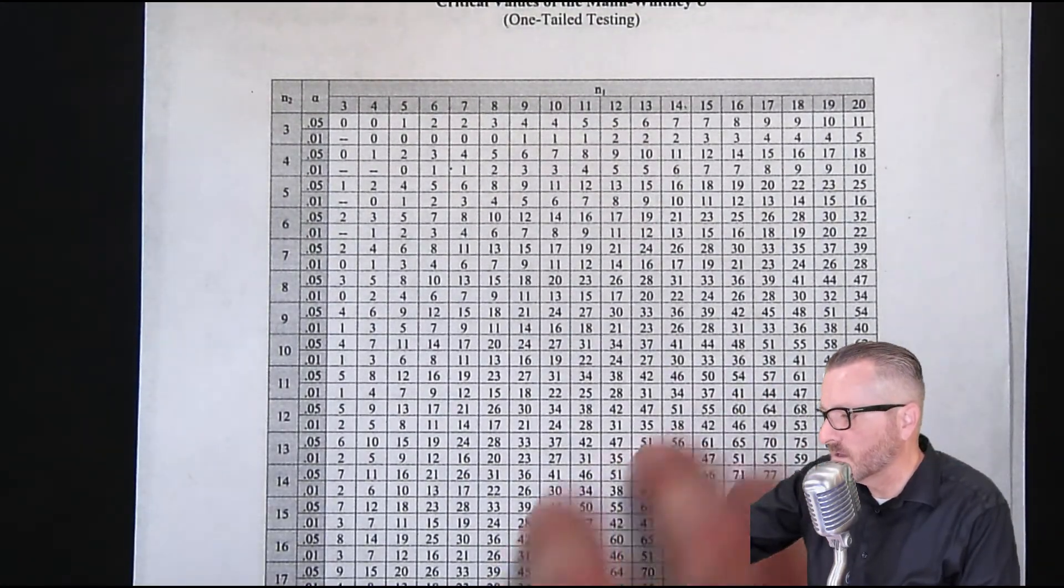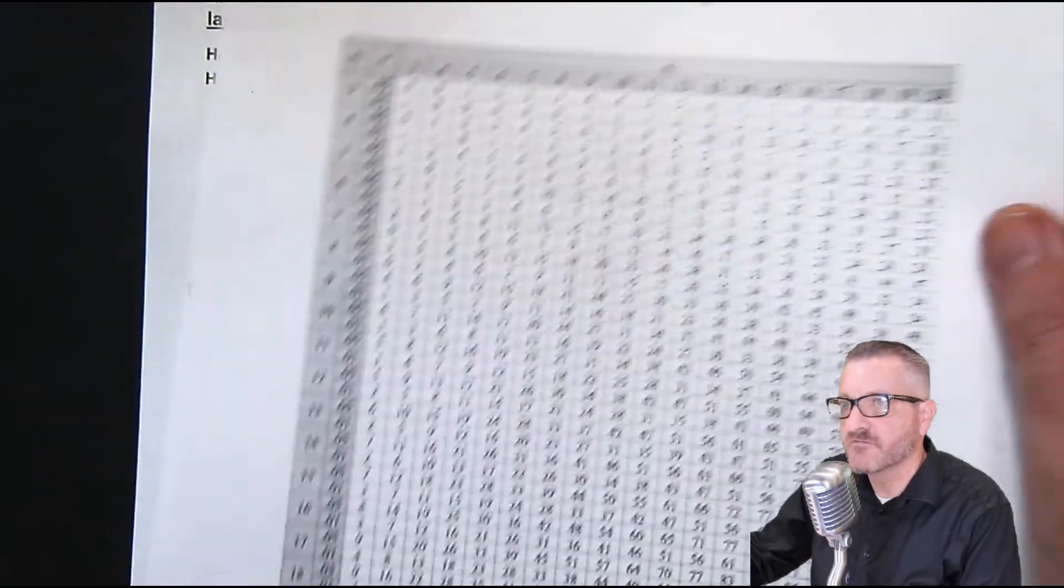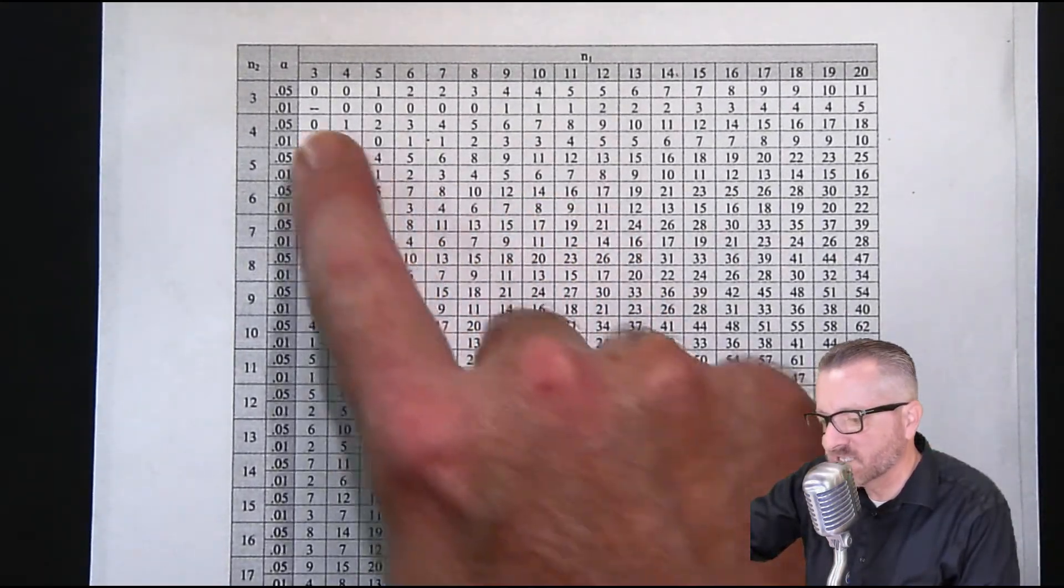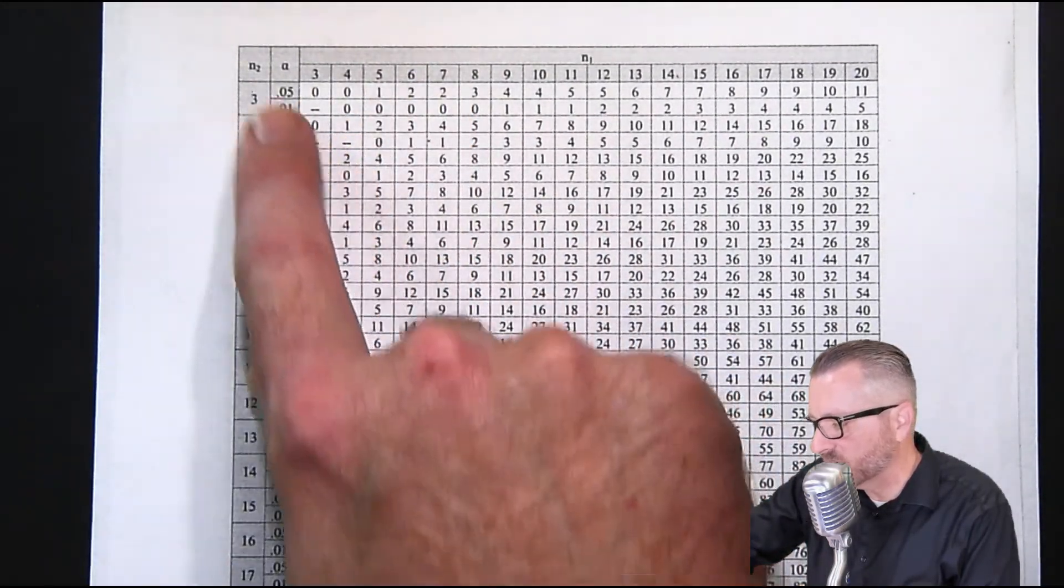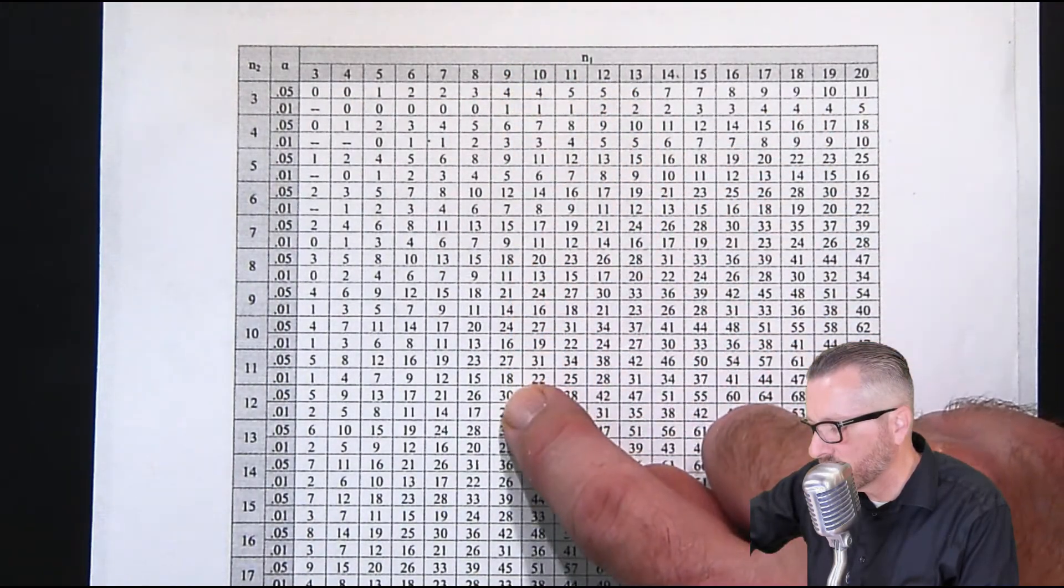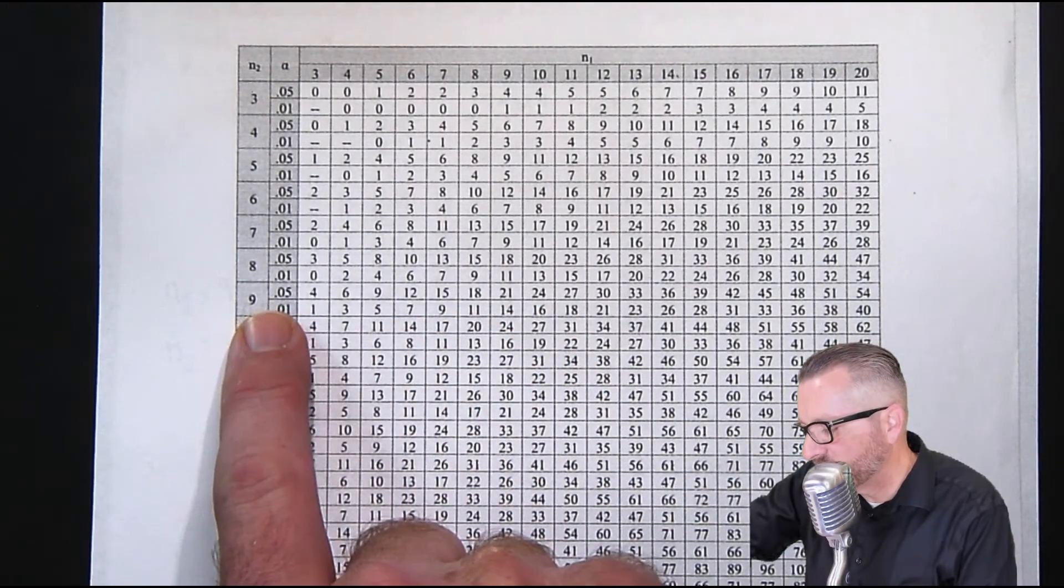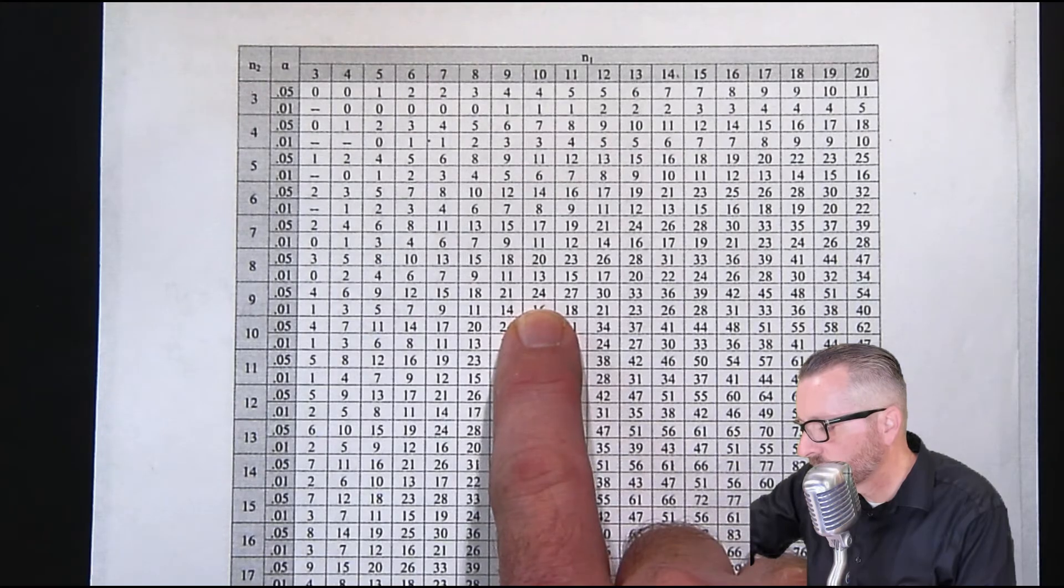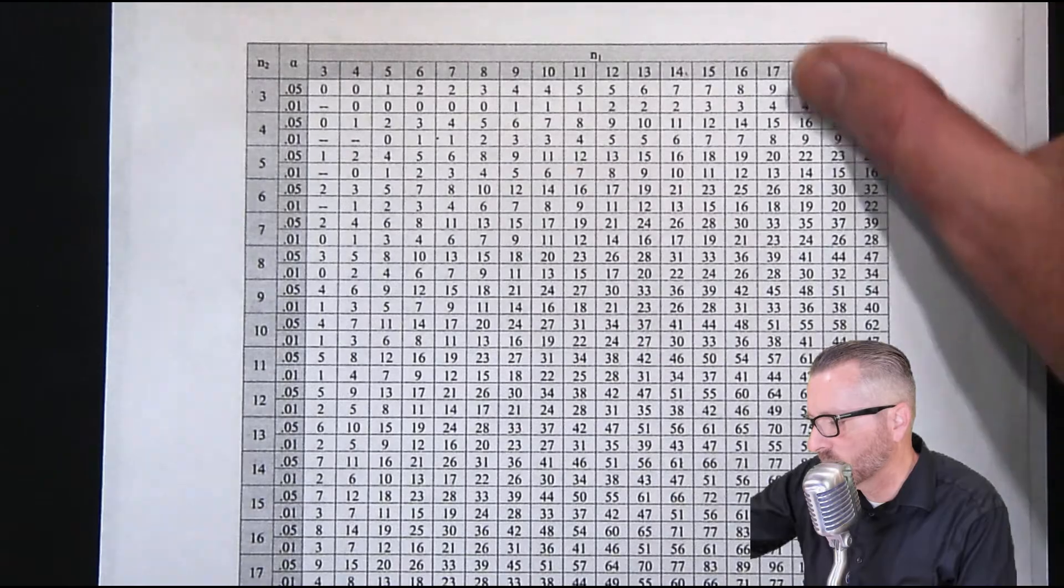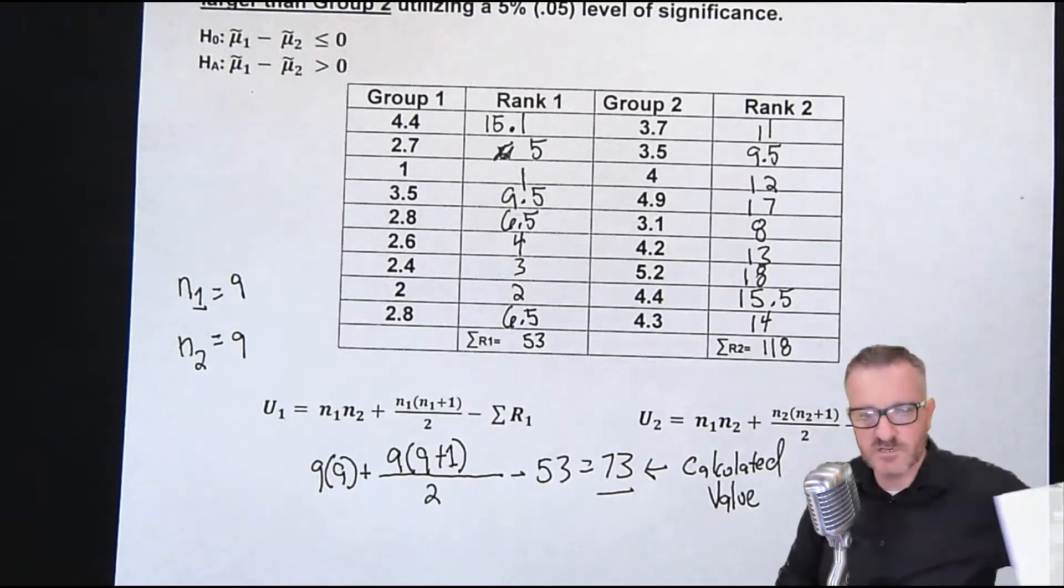In this case, I believe we're working with a 5% level of significance. So, in this case, they're both nine, so we don't have to get too concerned about which one. So there's a nine, and here's a nine. So this is the five percent, and it looks like it intersects at the 21. I'll put this table up as well. So intersects at 21.